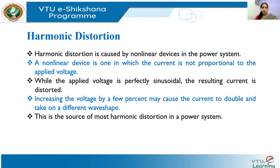Such loads are called non-linear loads. Examples include any load containing a power electronic converter, such as adjustable speed drives, motor drives, fluorescent lamps, induction furnaces, and arc furnaces. In non-linear loads, the current is not proportional to the applied voltage, even if that voltage is a perfectly sinusoidal waveform as produced in our power plants.